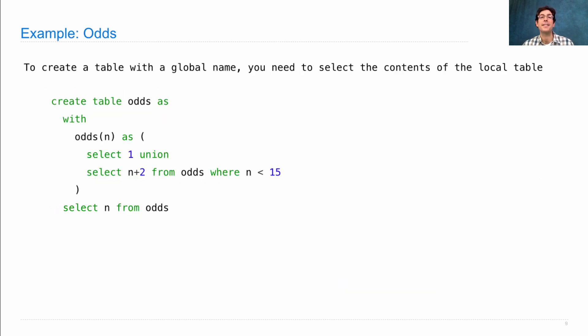Let's look at another example. To create a table with a global name, you need to select the contents of a local table if you want to build a recursive table.